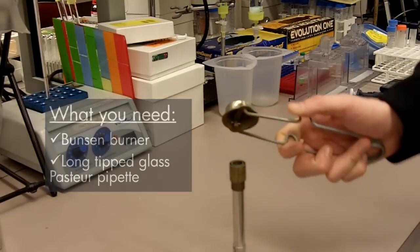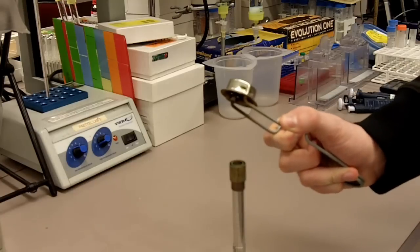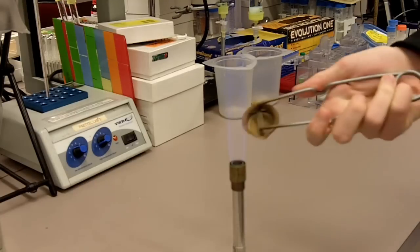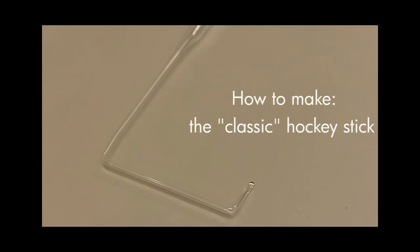The first thing we have to do is light the Bunsen burner. The first step is to seal off the tip of the pipette by rotating it in the flame so that a little ball of molten glass forms and seals the opening shut.